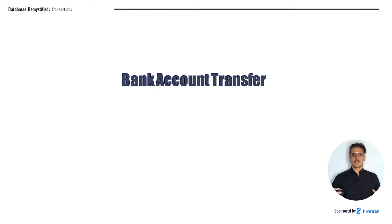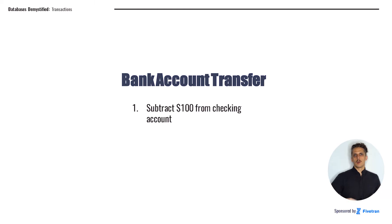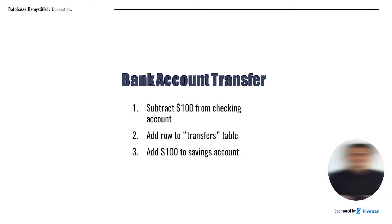To motivate this idea, let's imagine that we're building a software system at a bank, and we are programming the ability to make an account transfer. There are three steps to this process: first, we're going to subtract from the checking account; then we're going to add to the transfers table, describing the transfer; and finally, we're going to add to the savings account.